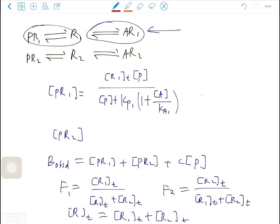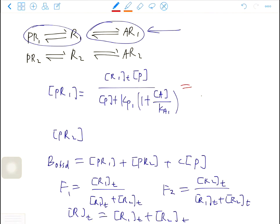So for the equation of PR1, we can write it as the fraction of receptor 1 times RT, which is this part, times P over P plus EC50.